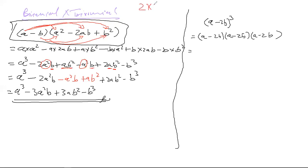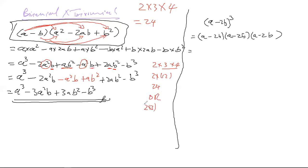Think of it like multiplying 2 × 3 × 4: you'd group two of them first. Whether you do 2 × 3 = 6 then times 4, or 3 × 4 = 12 then times 2, either way you get 24. We use the same associative logic here — take two of the binomials first and multiply them together.